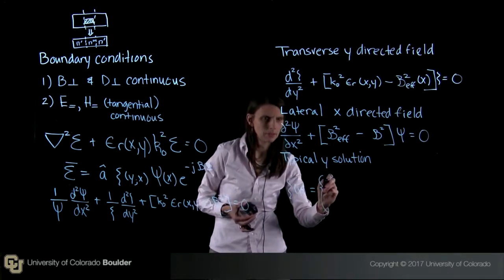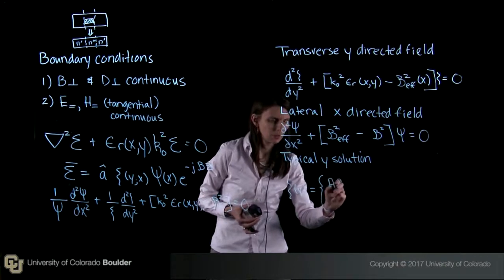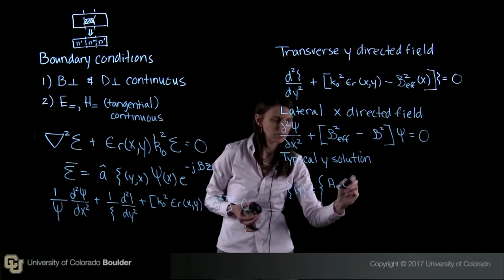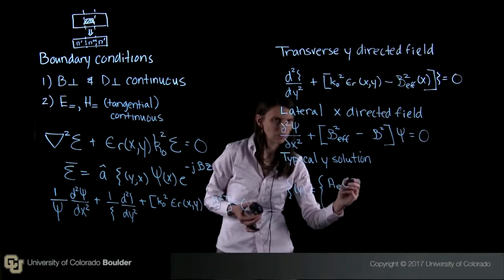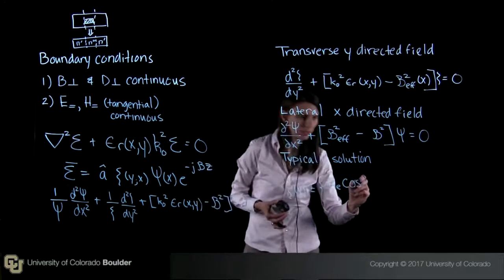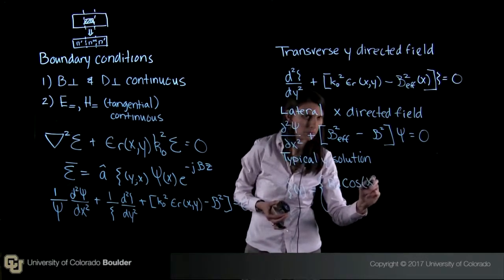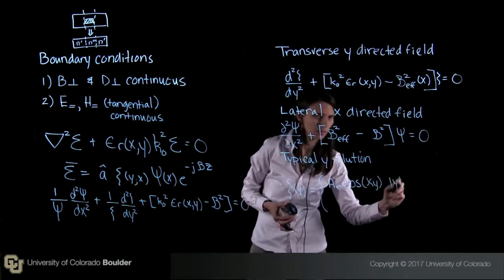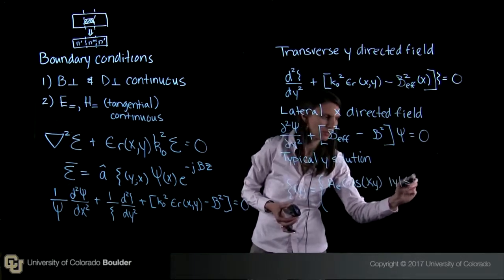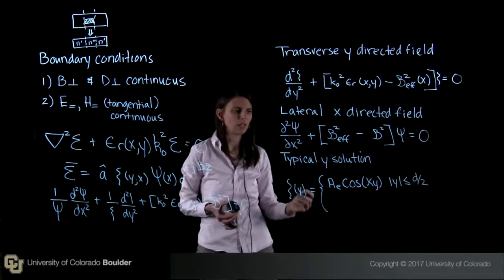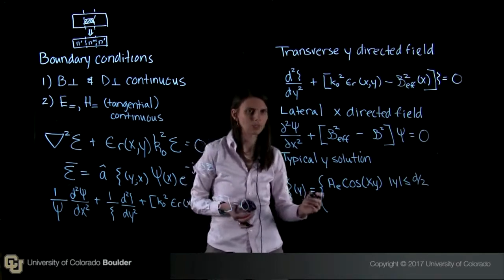So we're going to have the case of essentially where you're outside the region that guides. So we have ae, which is essentially a constant, and then cosine, and then here this is going to be kappa y, where y in this case is going to be less than or equal to d over 2. So this is the case where you're actually inside the high index layer, not actually outside.